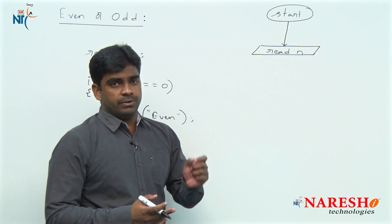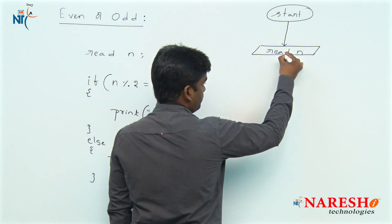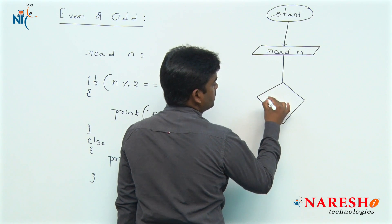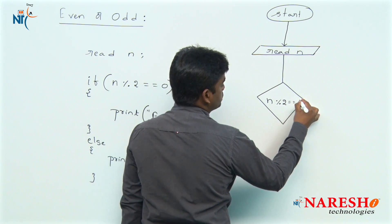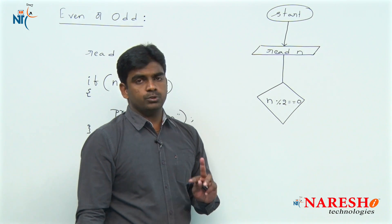now we need to check whether it is divisible by 2 or not. Condition we are representing with a rhombus. What is the condition? n mod 2 equals to 0. For every condition, two options we have: true or false options.